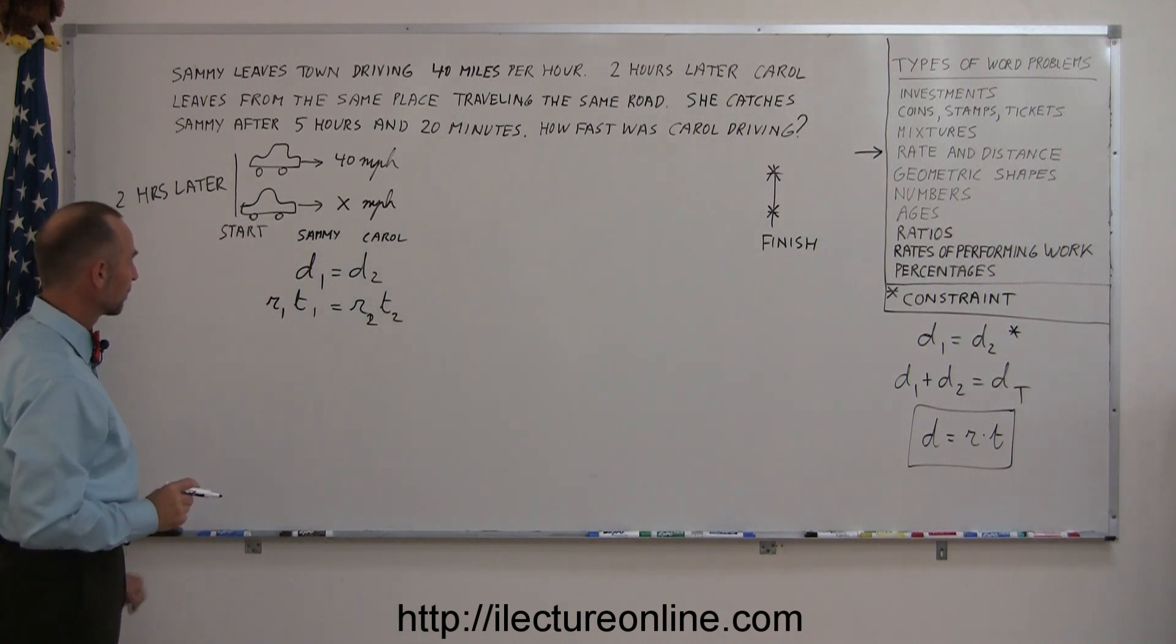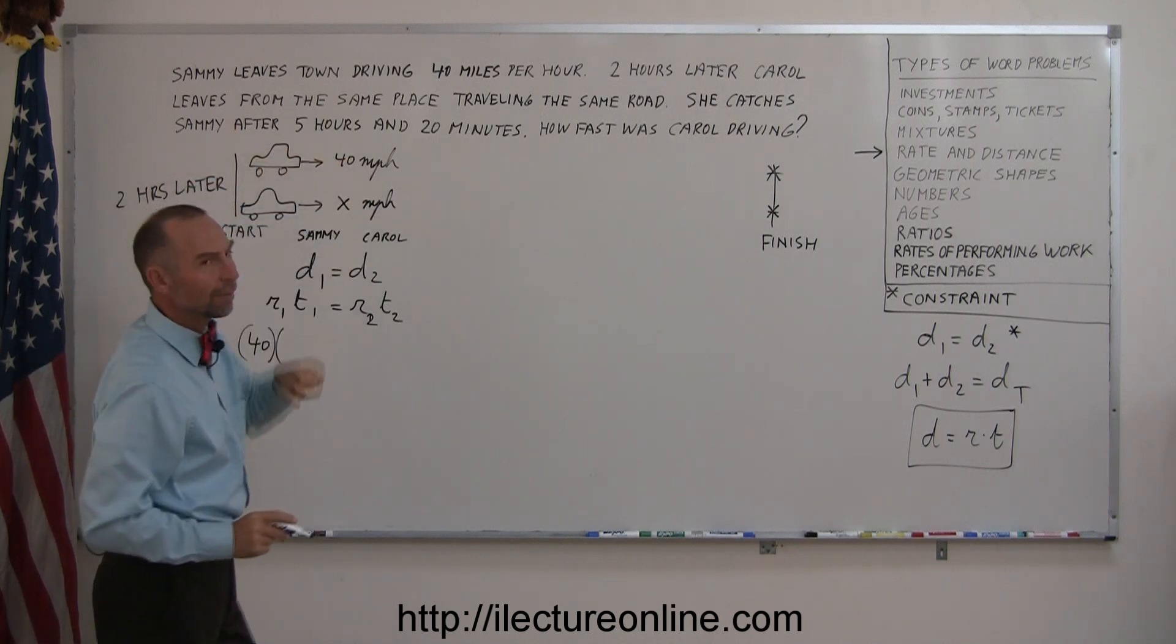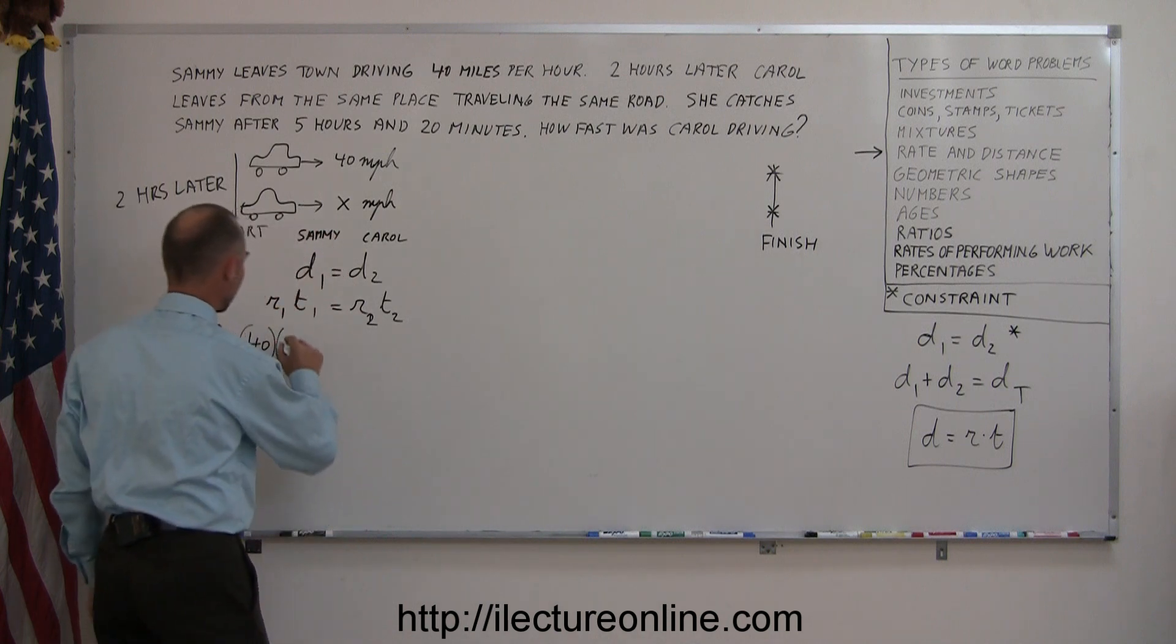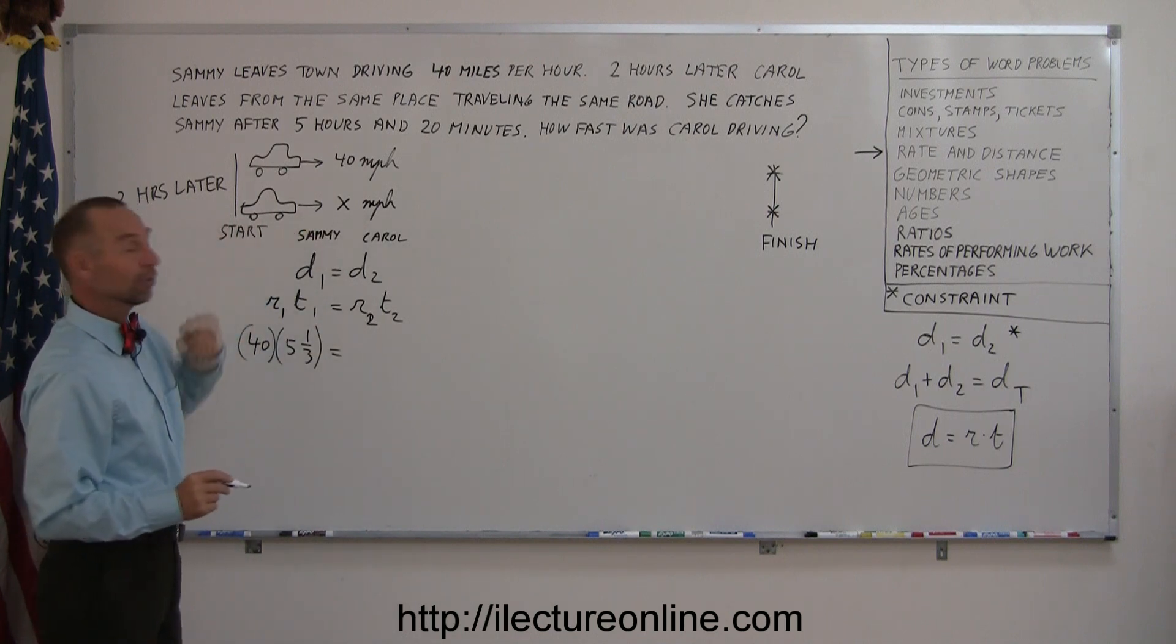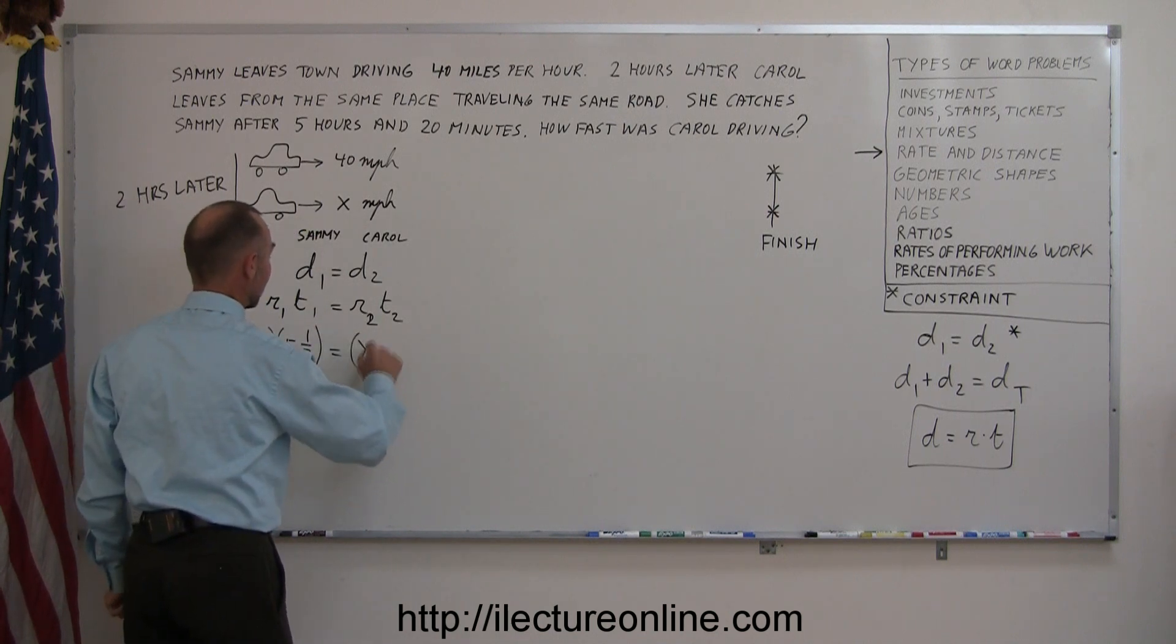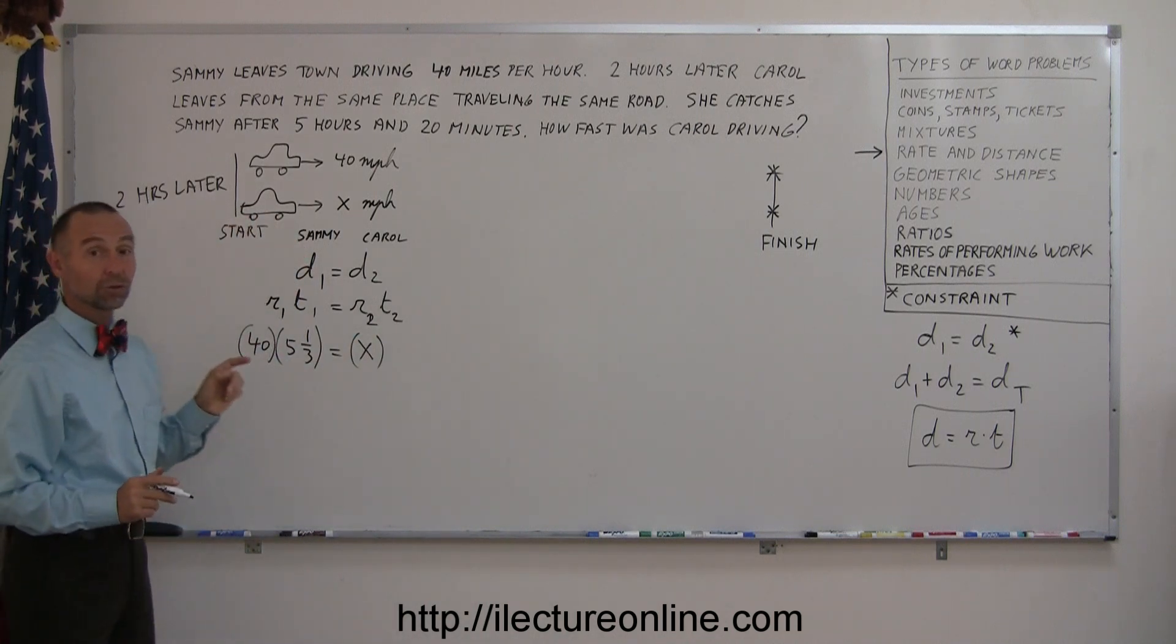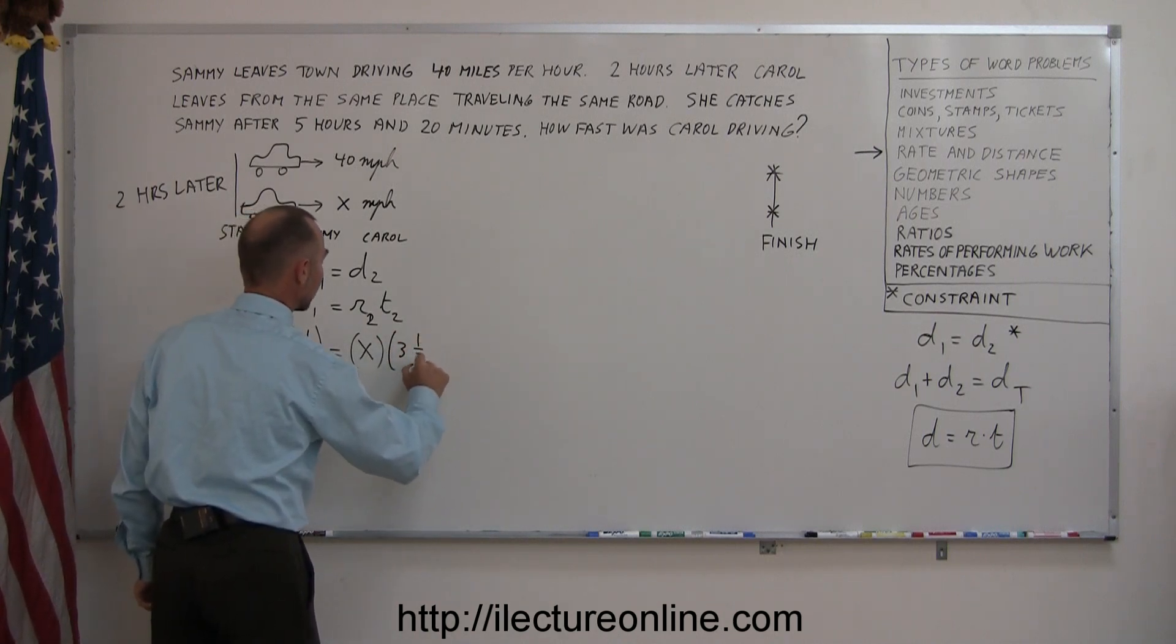Okay, now we can plug in what we know. The rate of Sammy is 40 miles per hour. And the time that Sammy takes, she takes a full 5 hours and 20 minutes. Now, 20 minutes is 1 third of an hour. So we can write 5 and 1 third hours. Equals the rate of Carol. Since we don't know what that rate is, we'll write x. And the time that Carol drives, well, she leaves 2 hours later. So she travels 2 hours less. So it's 5 and 1 third minus 2. That gives me 3 and 1 third hours.